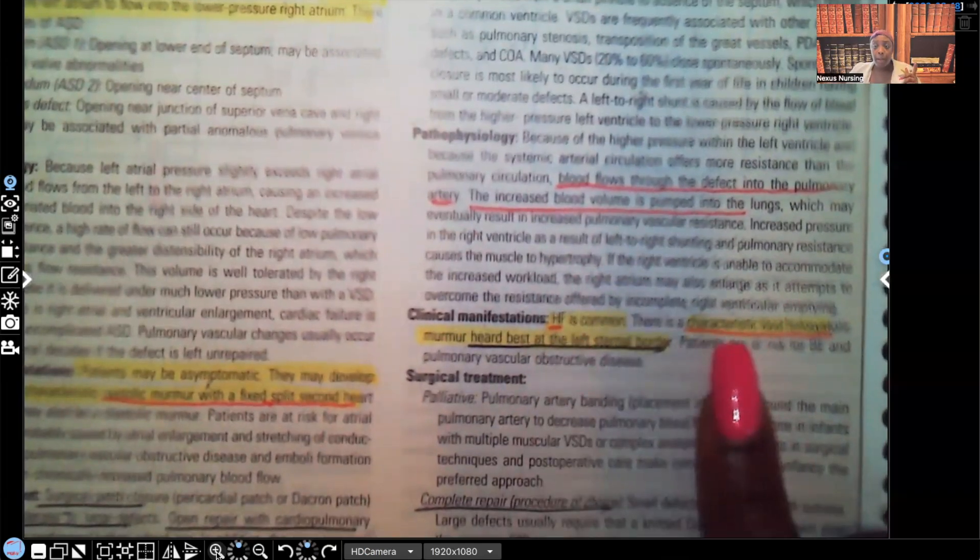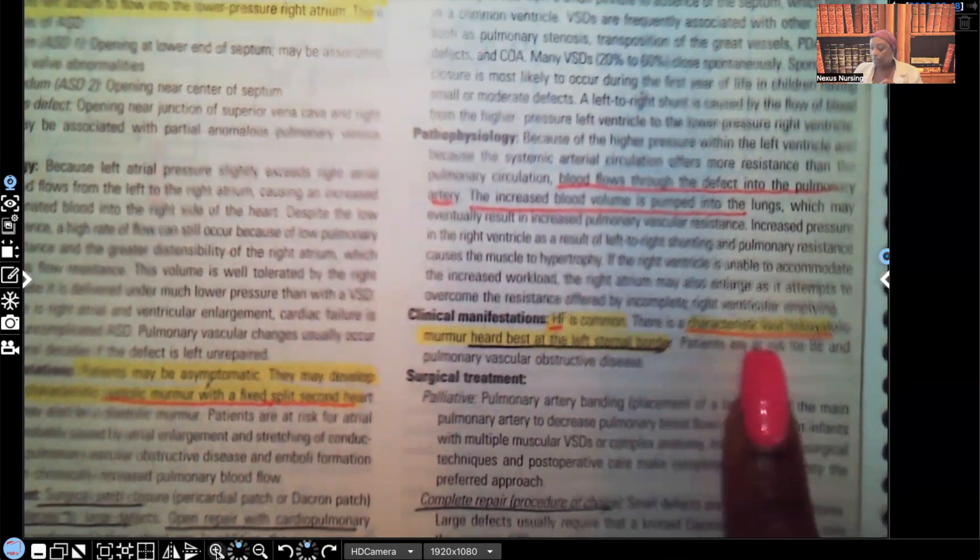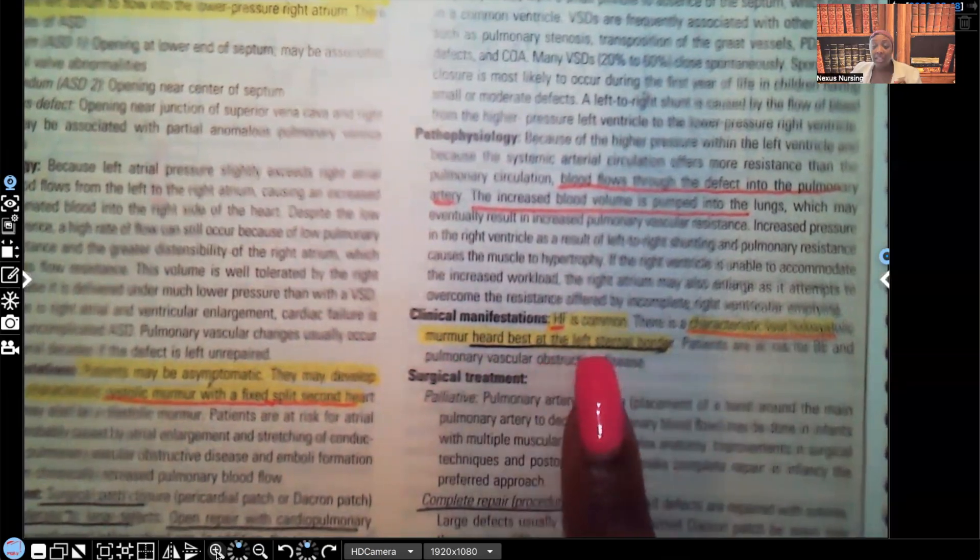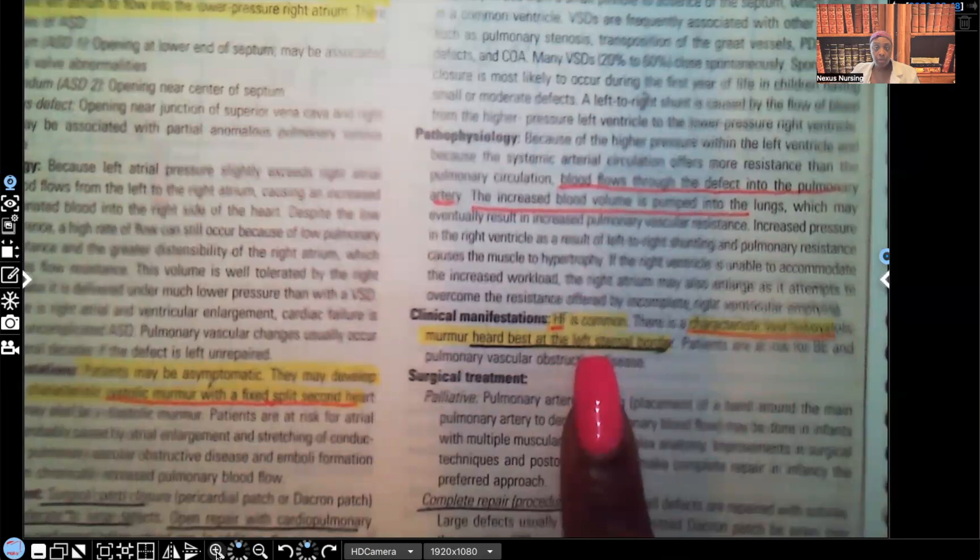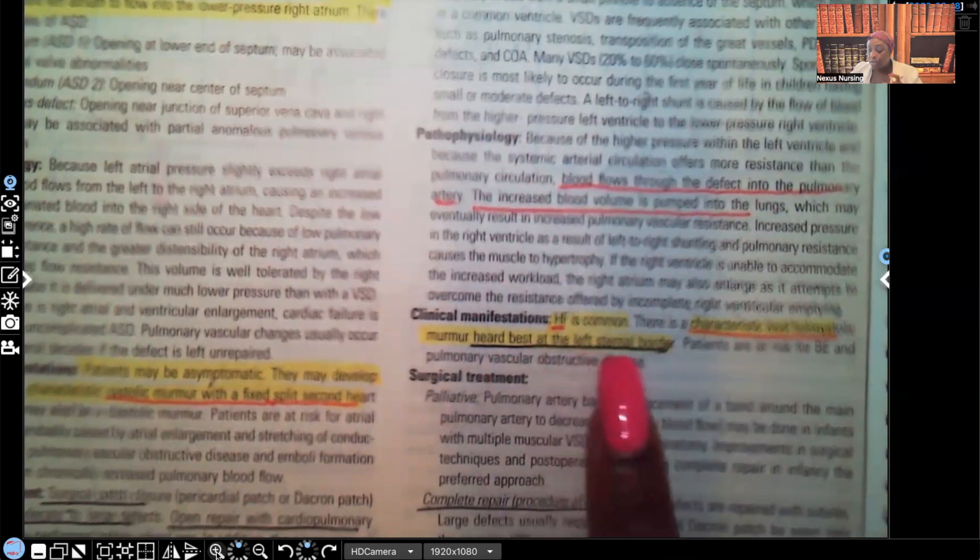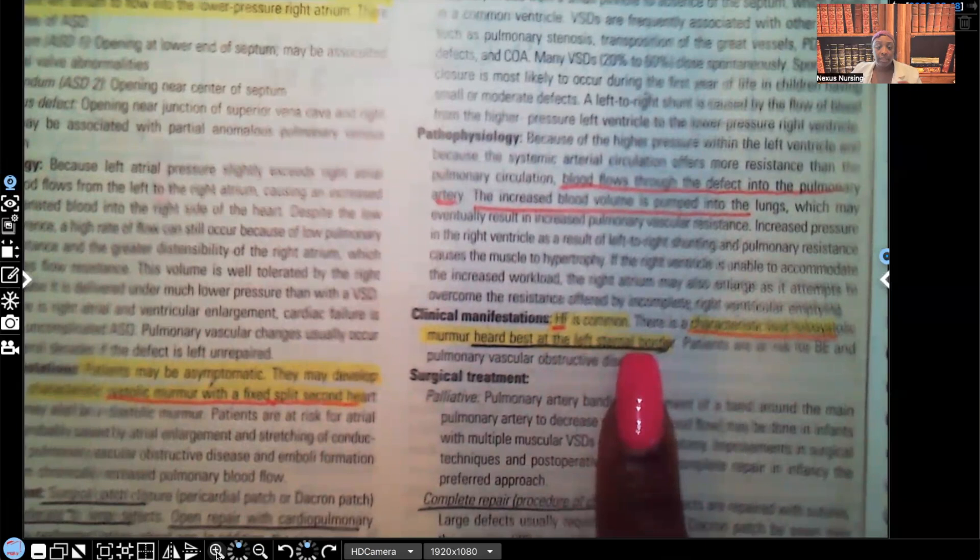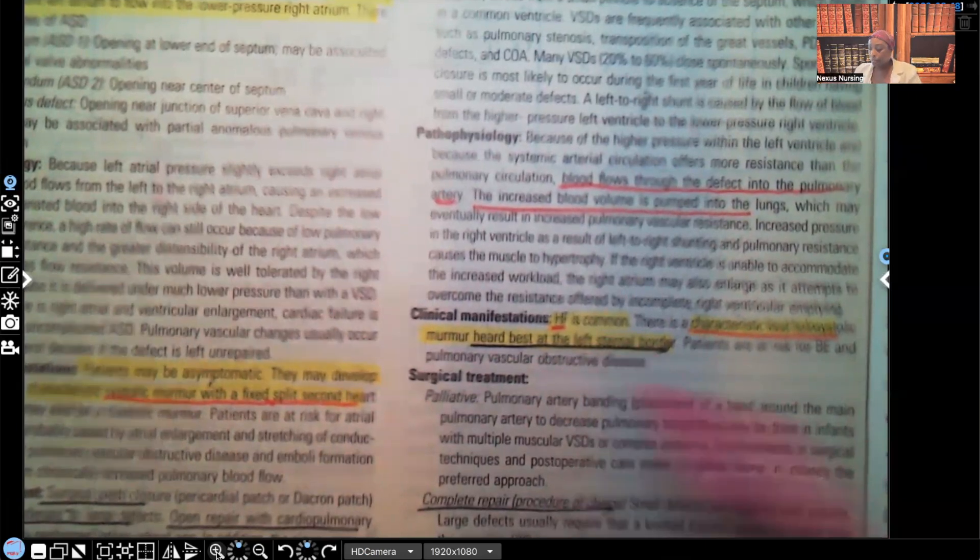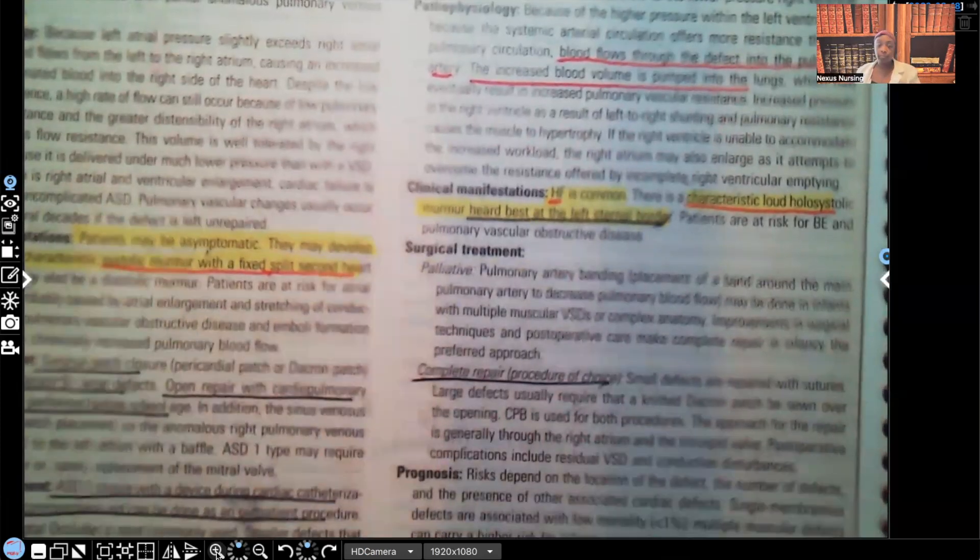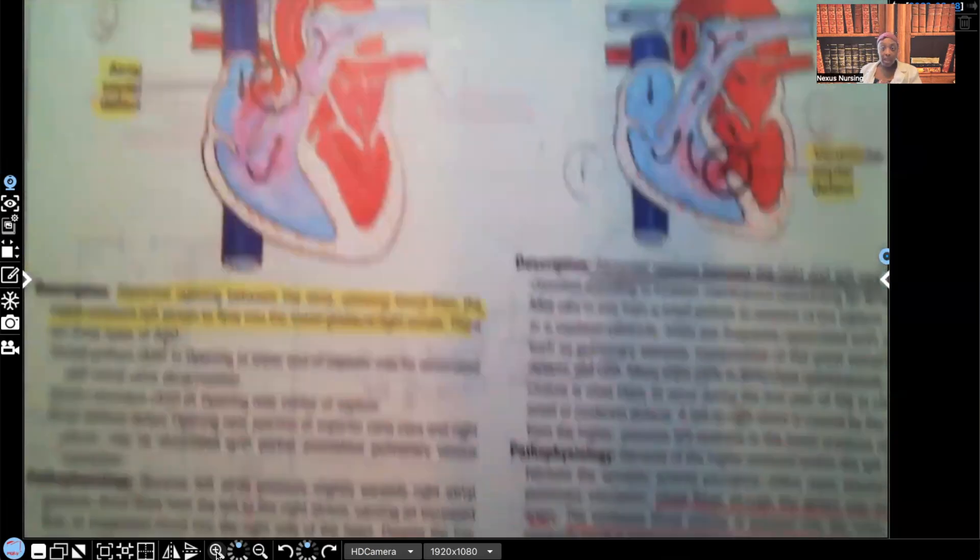There is a characteristic finding. Look at what's characteristic for ventricular septal defect: a loud hollow systolic murmur that's best heard at the left of the sternal border. When you see this, loud hollow systolic murmur heard best at the left sternal border, you know they're talking about ventricular septal defect and not something else. That is classically what you'll hear. Surgical management: the procedure of choice is complete repair. That wasn't so hard, was it?